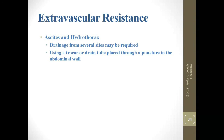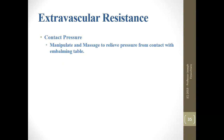For ascites and hydrothorax, drainage from several sites may be required since there is water collection throughout the body, especially the chest. Use a trocar drain tube placed through a puncture in the abdominal wall to get rid of as much fluid as possible.